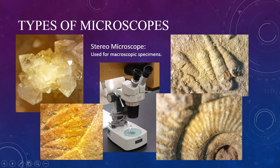While there are many different types of microscopes, such as an electron, epifluorescence, or phase contrast microscope, there are two types commonly found in an educational laboratory: stereomicroscopes and monocular or binocular compound microscopes.